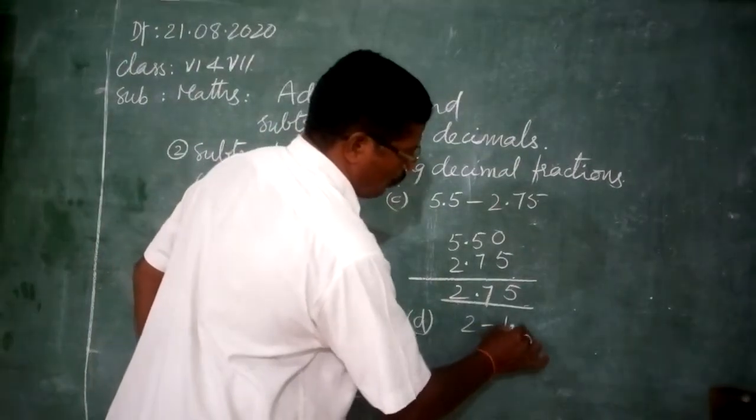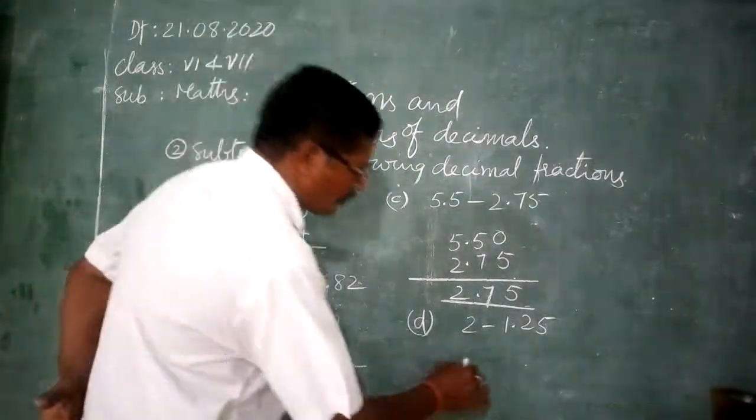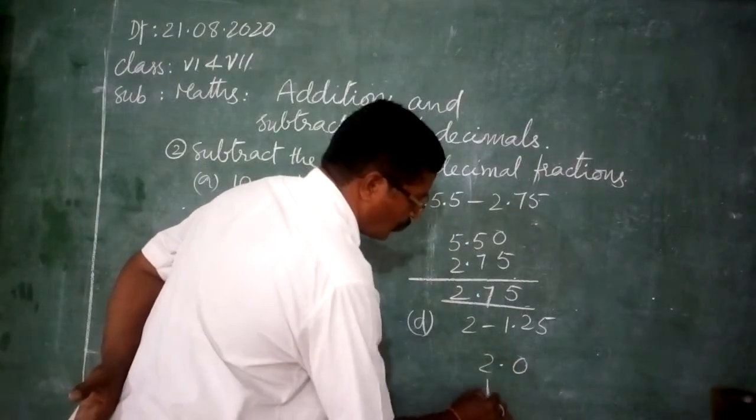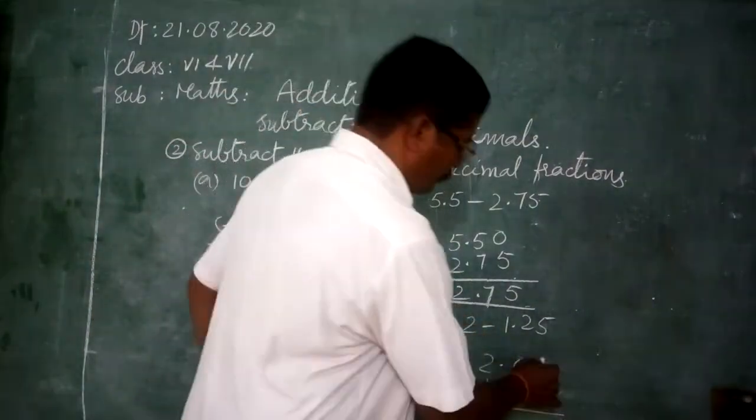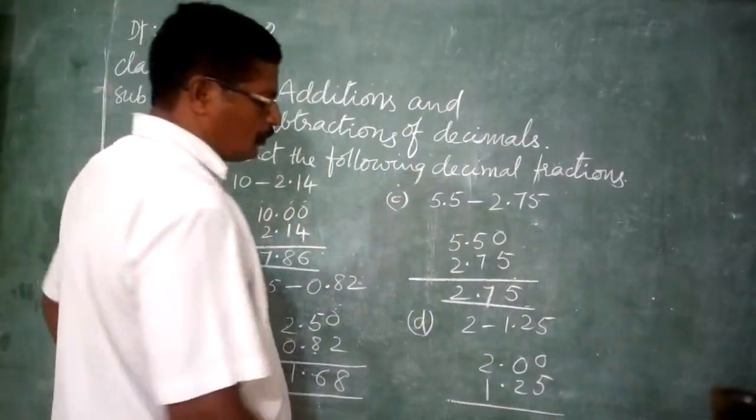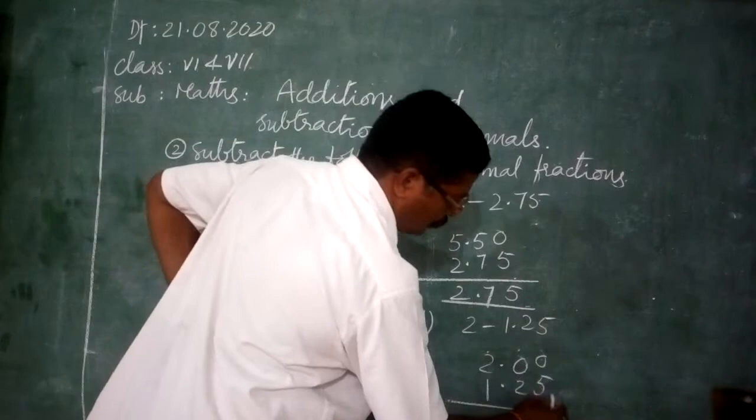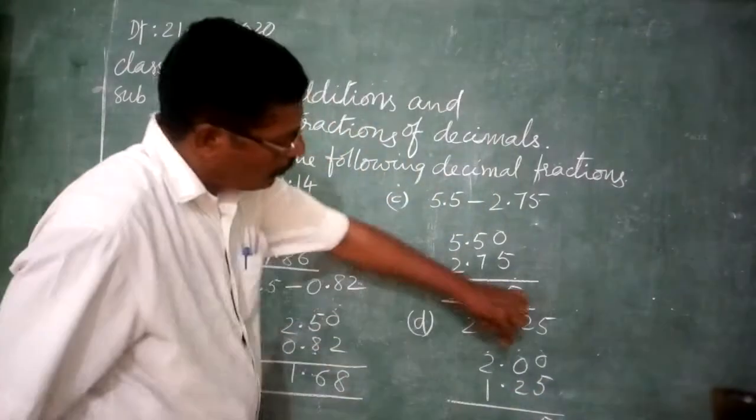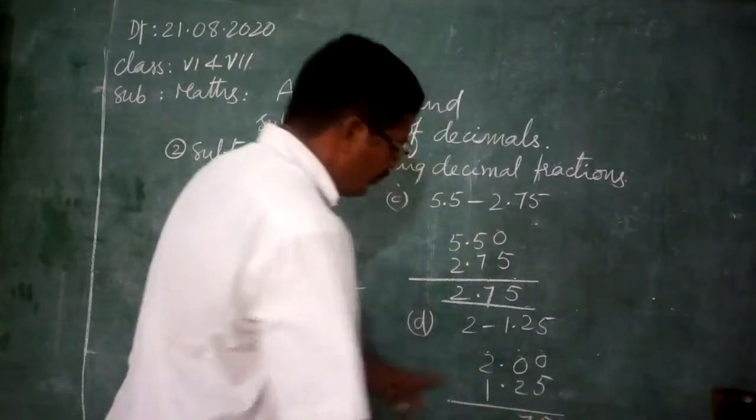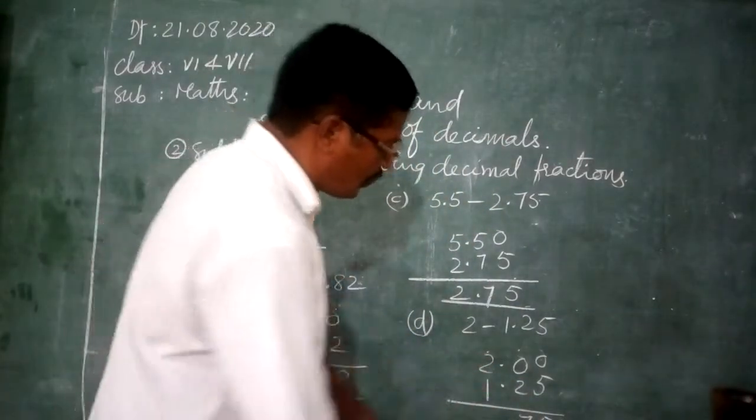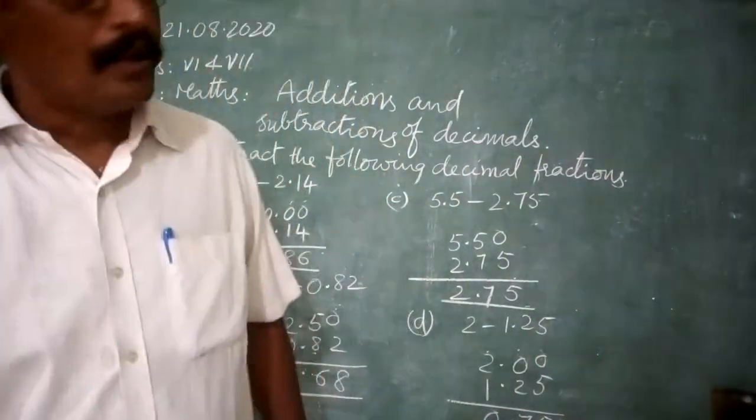2 minus 1.25. 2.0, 1.25. Again here there is no place, no digit. So put 0 here. Borrowing from here to here. 10, 10 minus 5, 5. What is here? 9, 9 minus 2, 7. Here 1, 1 minus 1, 0. 0.75. This is the answer.